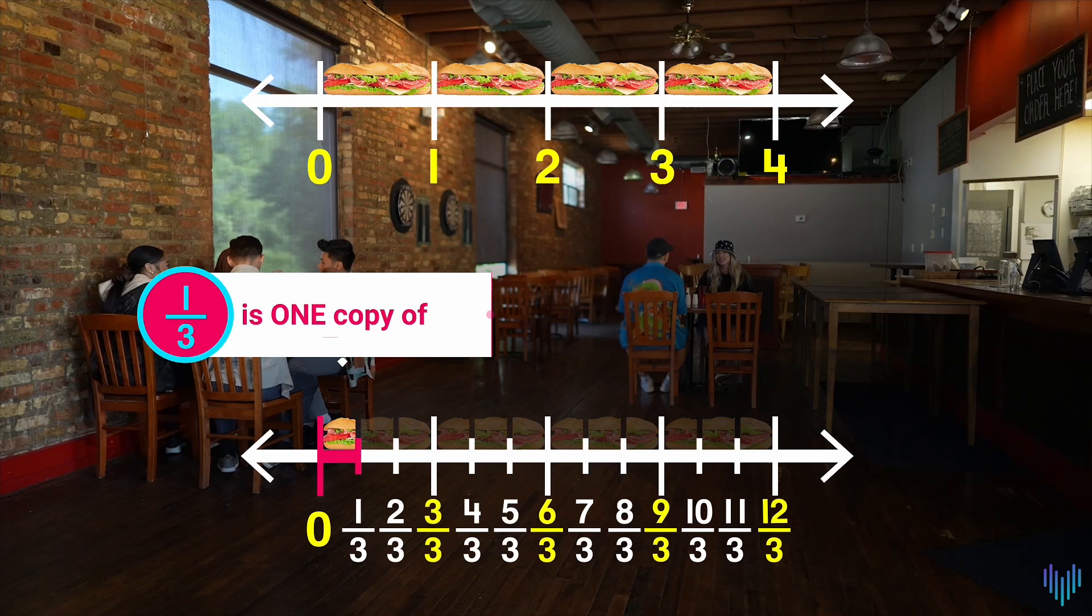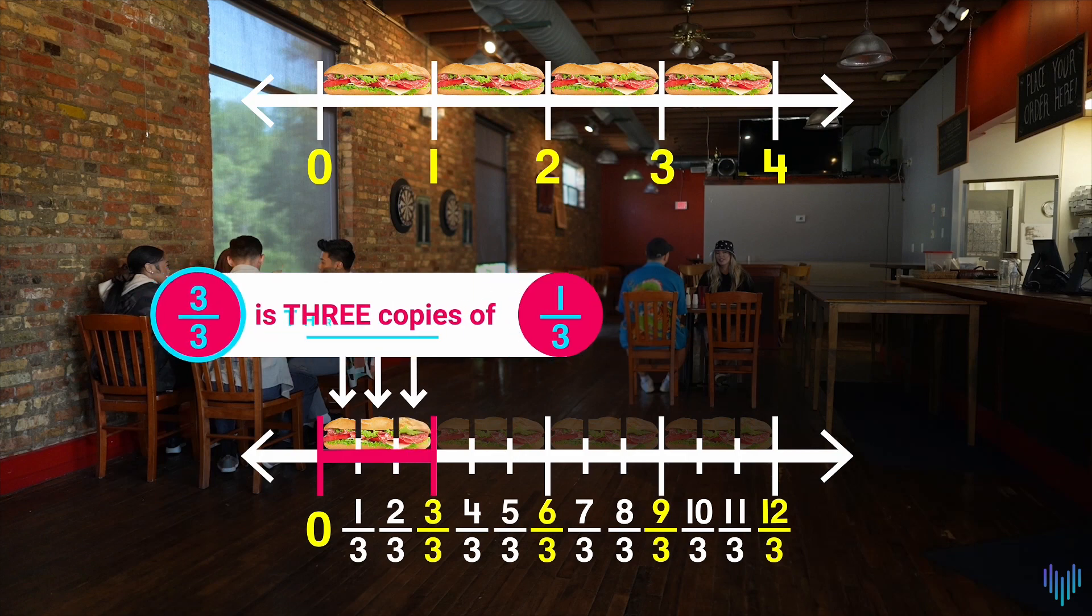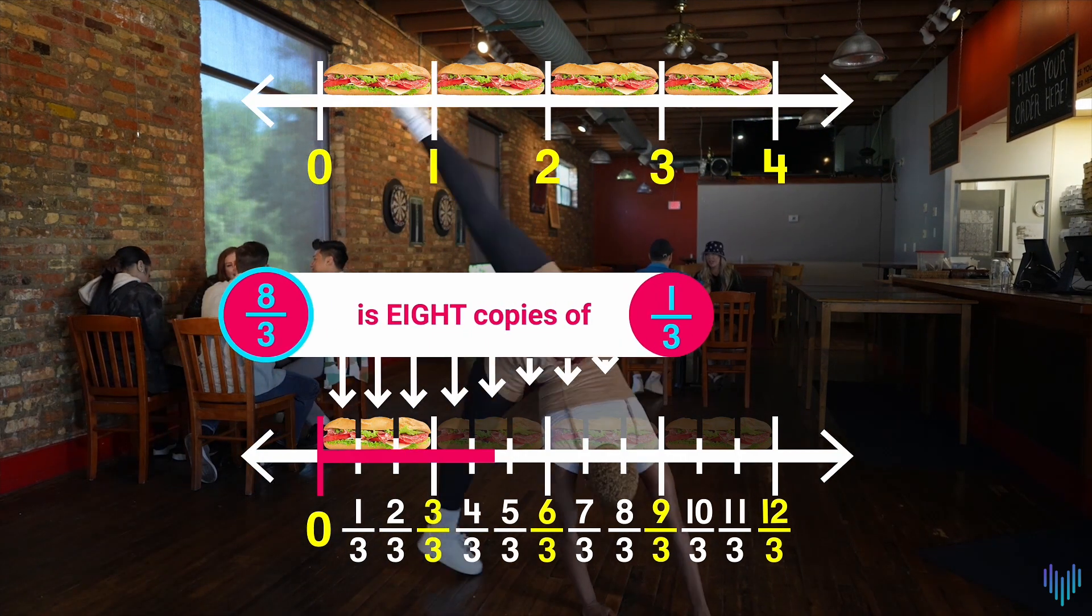Hey, follow me. One-third is one copy of one-third, and two-thirds is two copies of one-third, and three-thirds is three copies of one-third. Let's jump to eight.